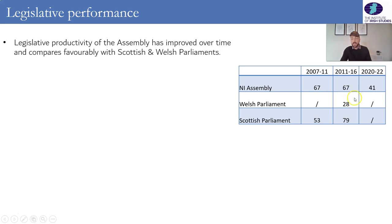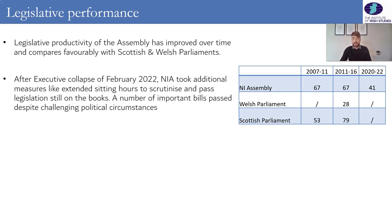Looking at the stats, the number of bills the Assembly has approved compares quite favorably with Scotland and Wales. For example, in the last full mandate from 2011 to 2016, the Assembly passed 67 bills — more than double what the Welsh parliament passed, and not too far behind the Scottish parliament, which has had a lot more practice because it hasn't had all the suspensions that Northern Ireland has had.